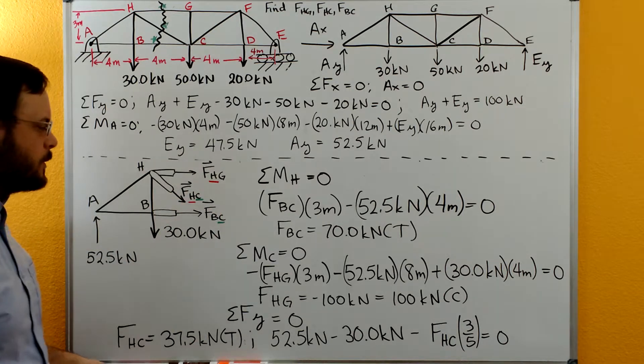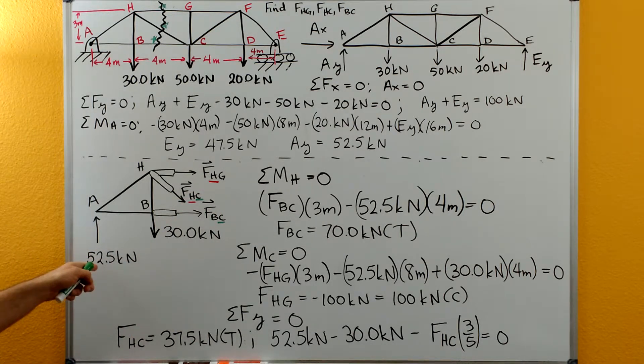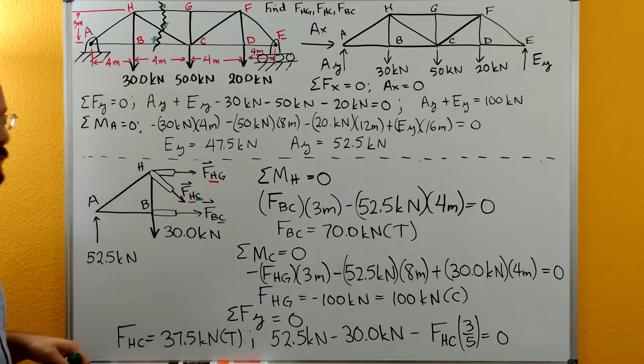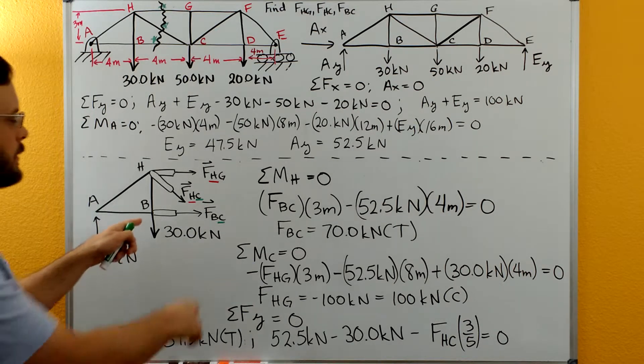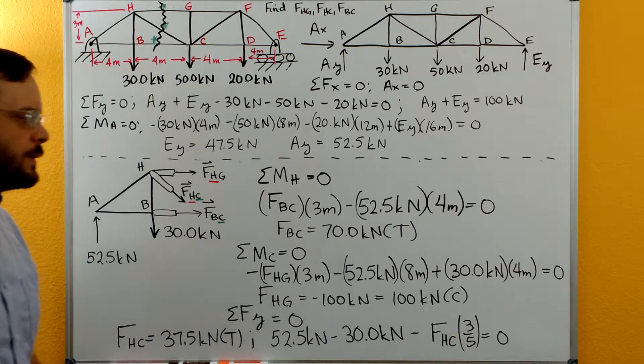We'll have FHG times that Y distance of 3 meters giving a negative moment, the 52.5 times the 8 meter distance over to C, and the 30 kilonewtons times the 4 meter distance over to C.